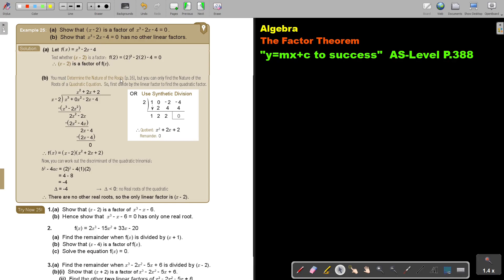So you must determine the nature of the roots - page 16, chapter 1. But you can only find the nature of the roots of a quadratic function. So first divide by the linear factor to find the quadratic factor. So again, I do my long division, and I end up with my quadratic factor.